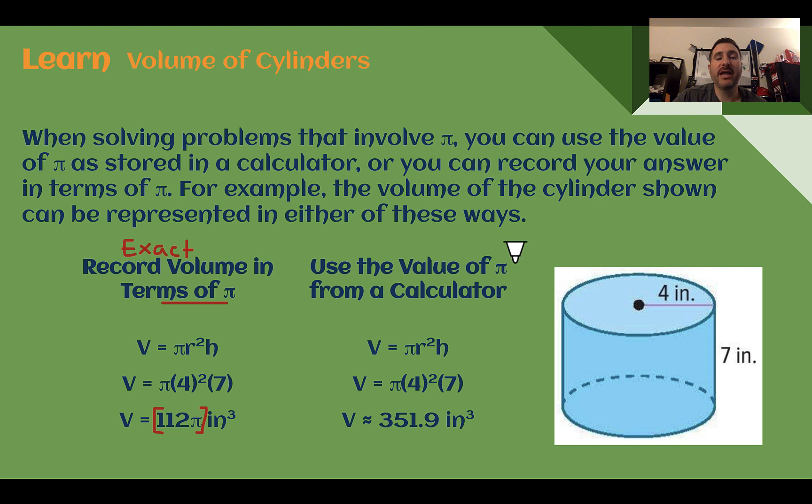If we use the value of π from a calculator, which pushing the π button rounds it off, then we get what's called the approximate value. It's multiplied out, 351.9. The π symbol is no longer there. So when they ask you to find the approximate volume, this is when you use your calculator. Or maybe even instead of the π button, you might round it off to 3.14, as you probably did with circles in a previous grade. So we need to pay attention to what the question is asking us to determine if we're leaving it in terms of π, or using the π button, or rounding it to 3.14.